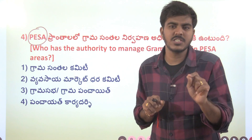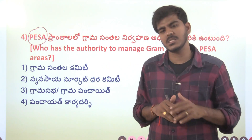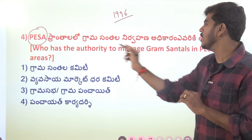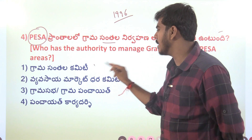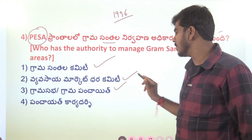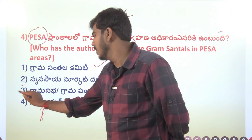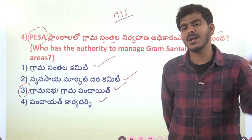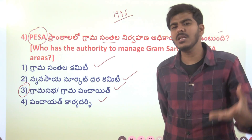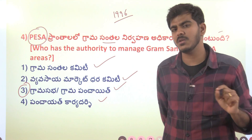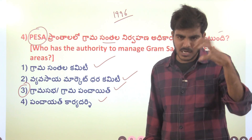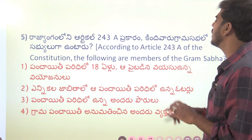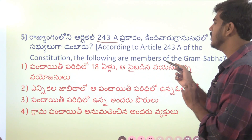The answer is Grama Sabha. So what does the Grama Sabha decide? The Grama Sabha is a very important body. We have answers to the majority of the questions. The Executive Decisions is very important, and if you are aware of Article Number 243, you can refer to it.